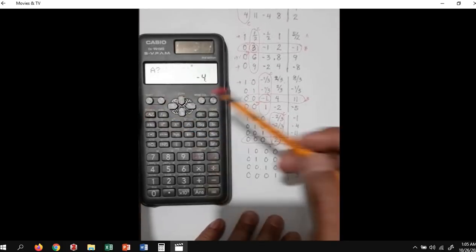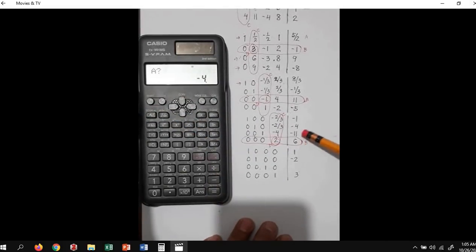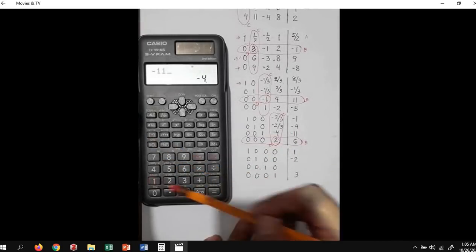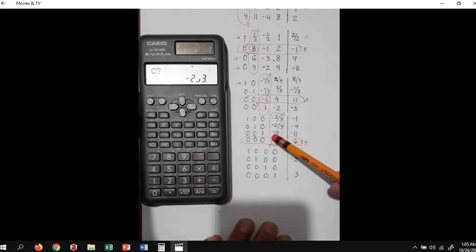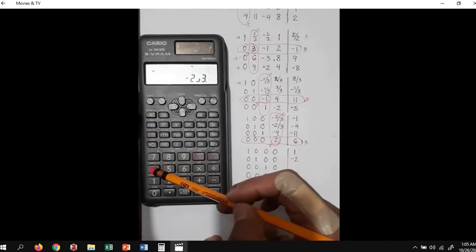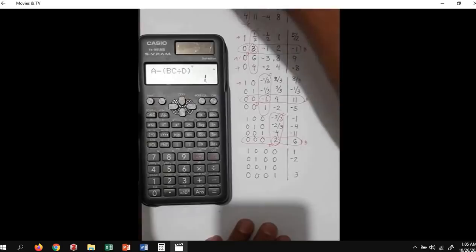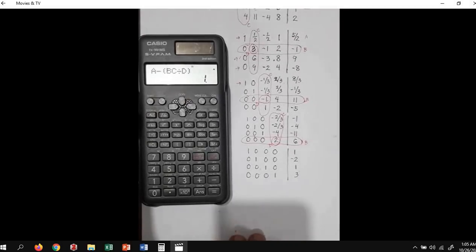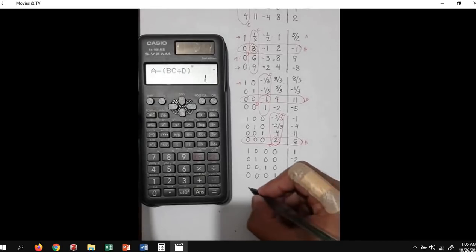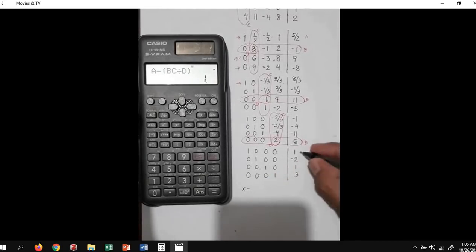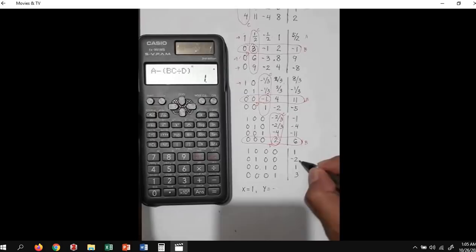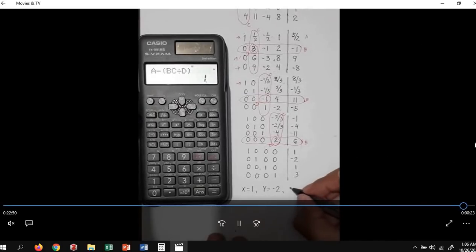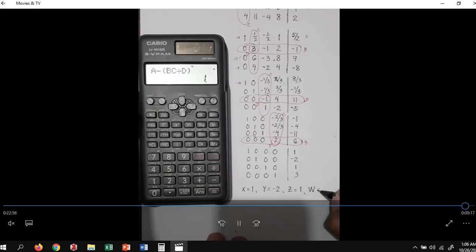Last: A is negative 11, B is 6, C is negative 4, and D is 2. Just press equals. There we have it. We now have our unknown variables x, y, z. X equals 1, Y equals negative 2, z equals 1, and w equals 3.